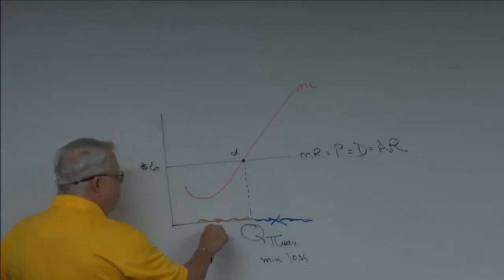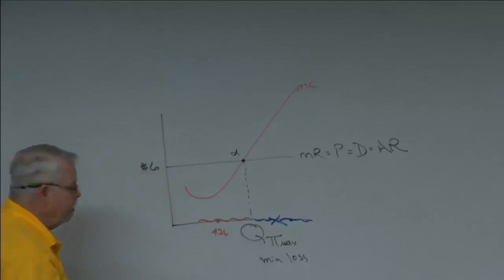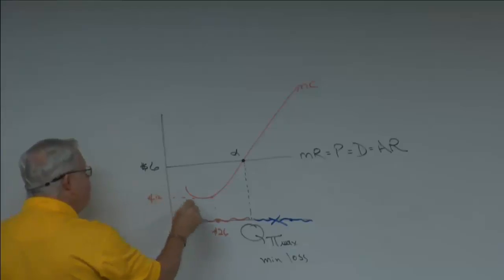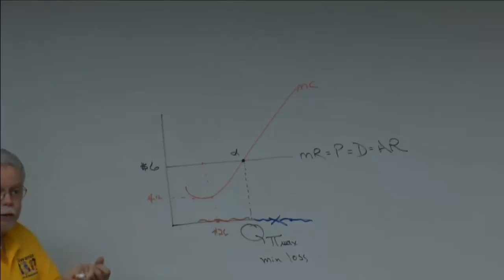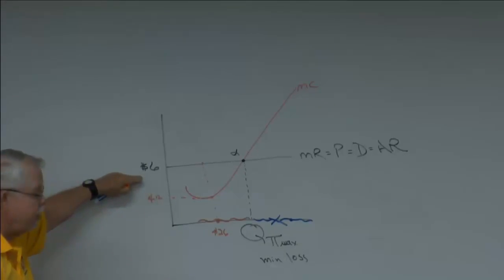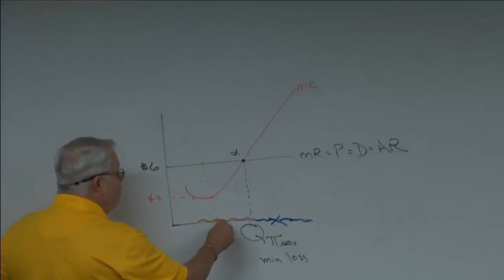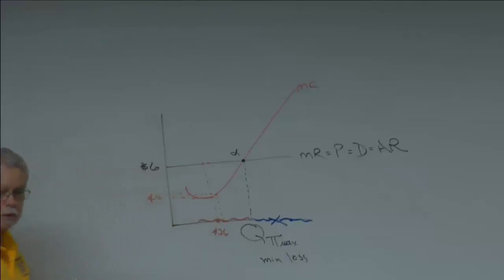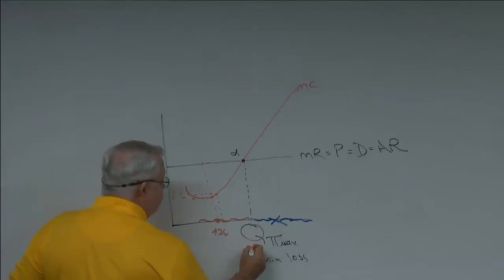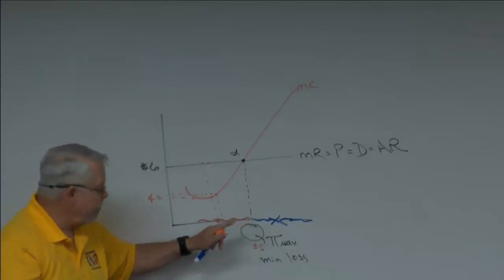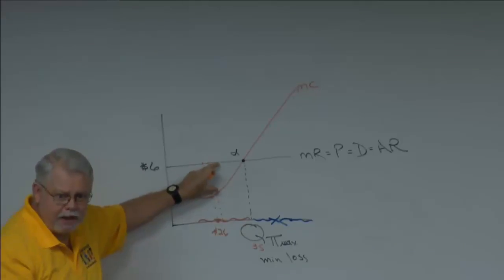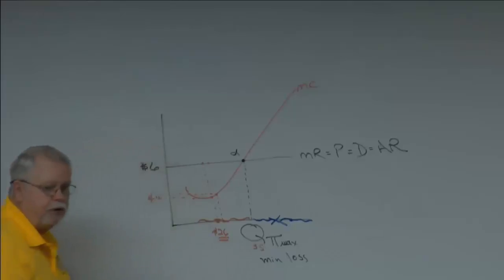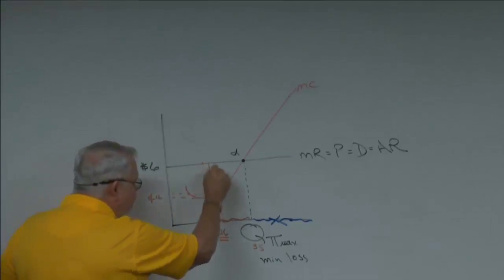Say you stop at unit number 26. When we read up, it cost four dollars and 12 cents but I made six dollars on it — I clearly want to produce and sell that; I made a dollar and 88 cents. What about unit 27? The marginal revenue still exceeds marginal cost, but by not quite as large an amount. As I move from unit 26 to unit 35, I'm making less money per unit but I'm still making money, so keep producing.